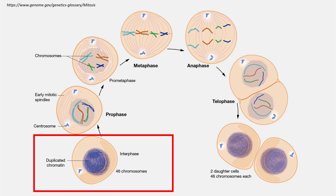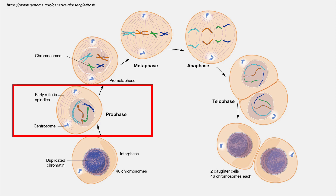In mitosis, cell division involves several stages. The first stage is called interphase, and this is when the cell grows and replicates its DNA. The next stage is called prophase — I like to call this the prepare phase. In this stage, the DNA and proteins, referred to as chromatin, condense to form chromosomes and the nuclear membrane begins to break down. A spindle fiber forms, which extends from the centromeres located at the opposite poles of the cell.